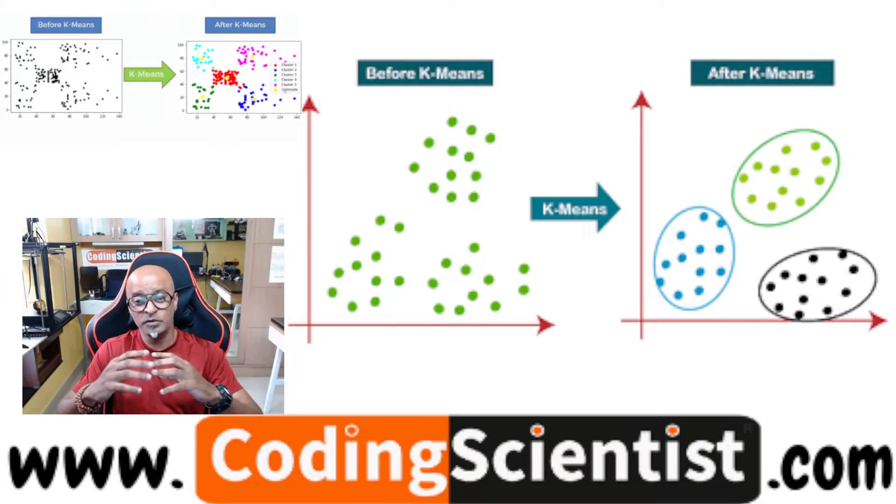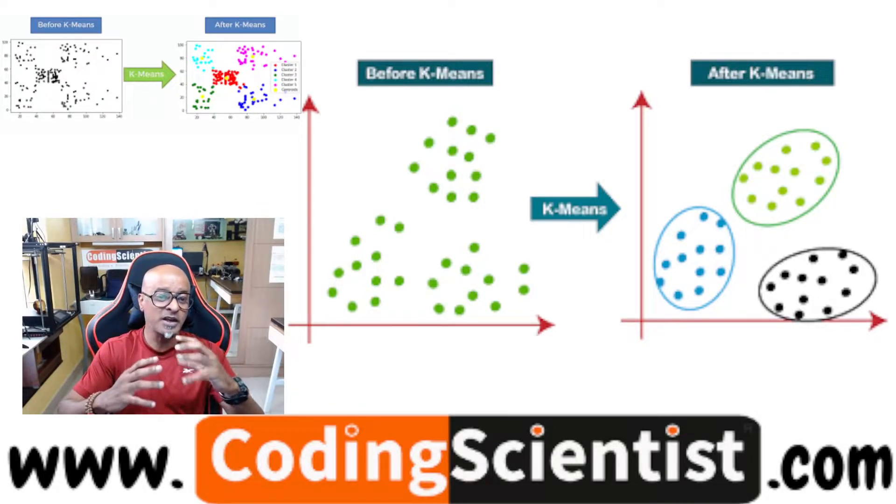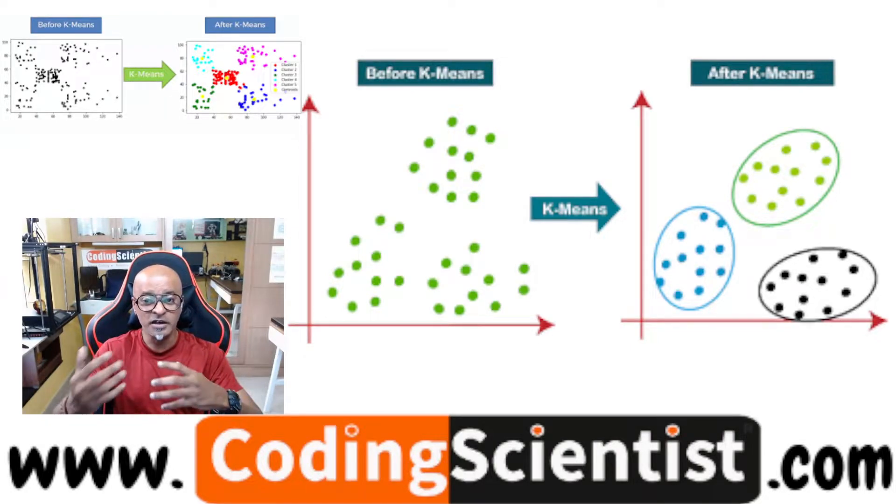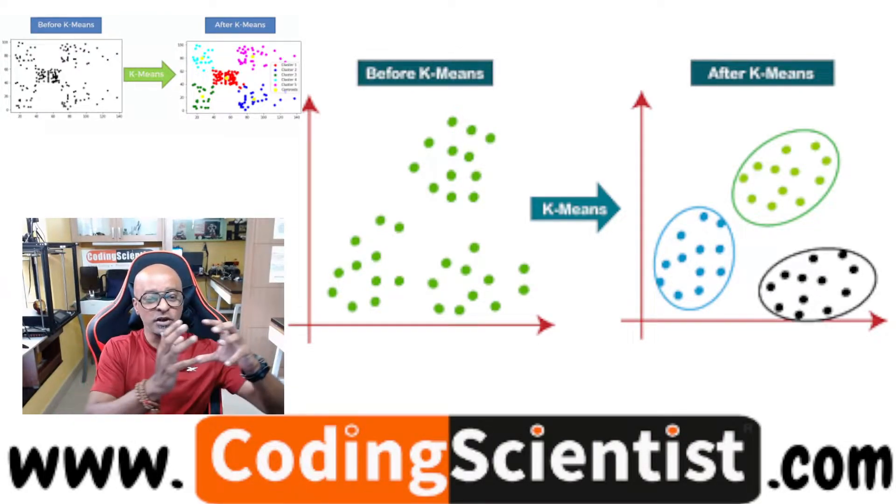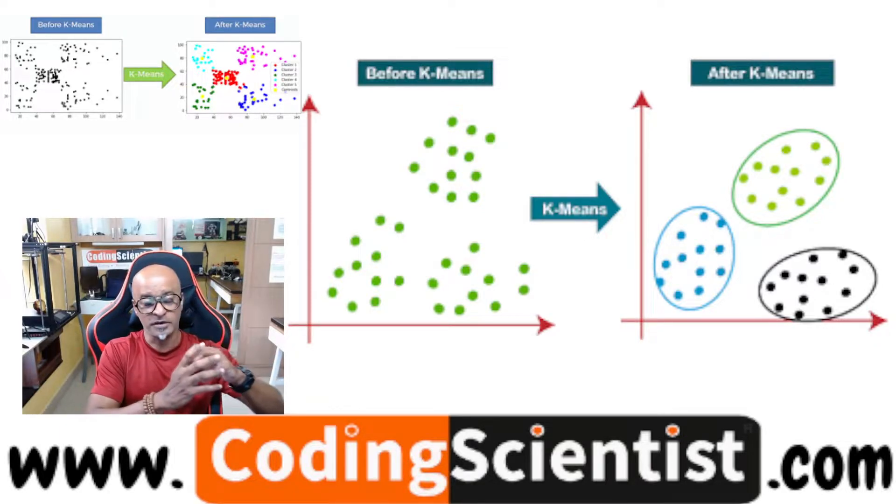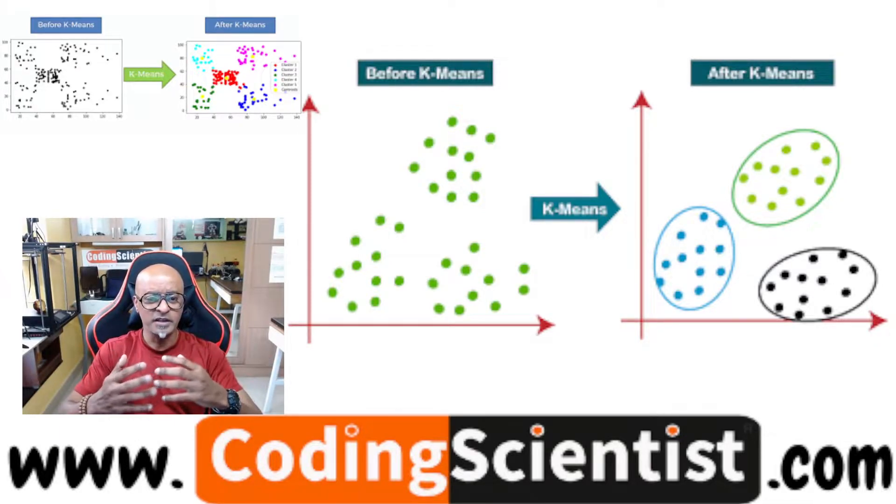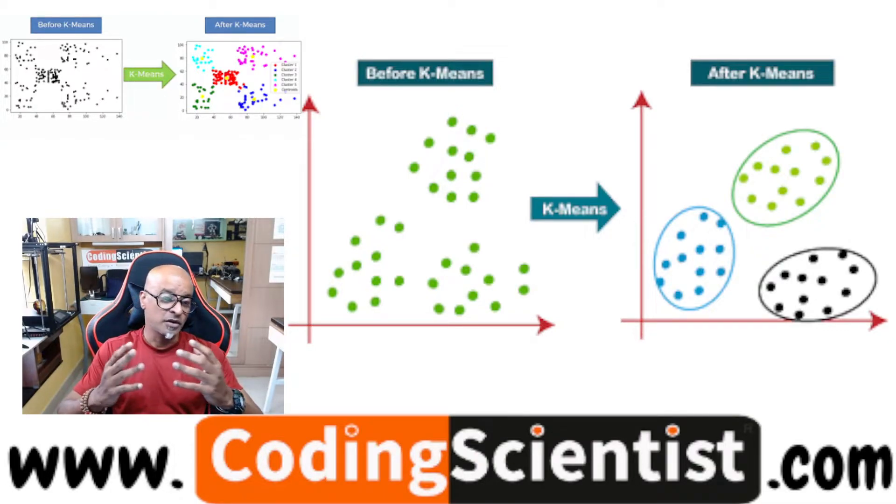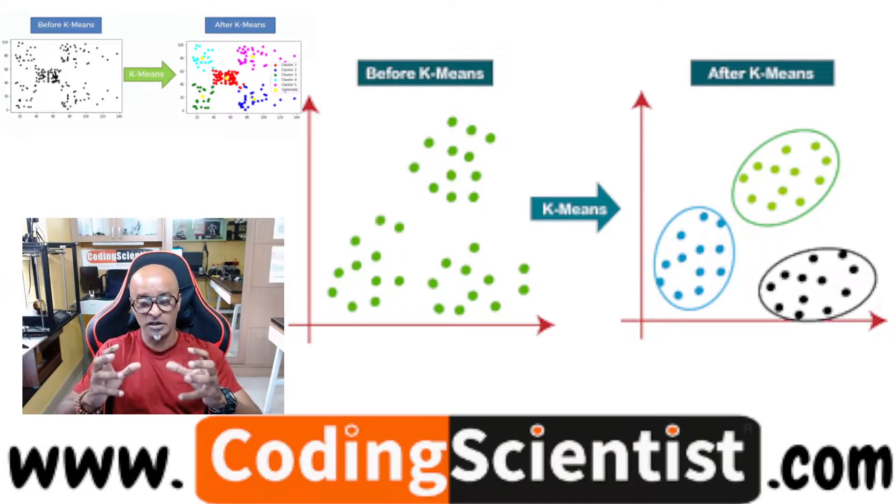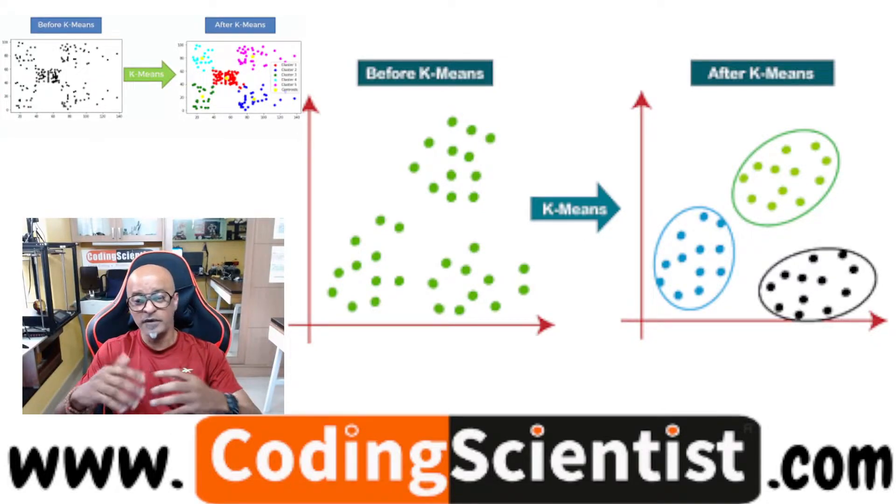This algorithm groups the unlabeled data set into different clusters as you can see in the chart, which clearly indicates that the unlabeled data sets are put together in small dotted formats. Here, the K defines the number of predefined clusters that need to be created in the process. For example, K equal to two means two different clusters. If you define K equal to three, there'll be three different clusters. If you define K equal to five, there's going to be five different clusters.